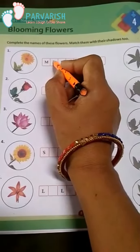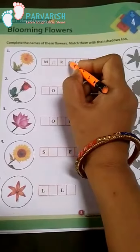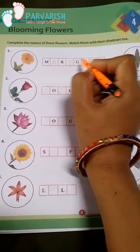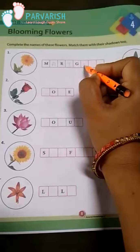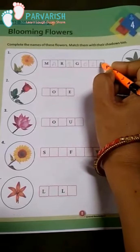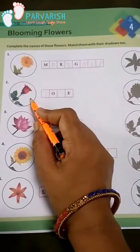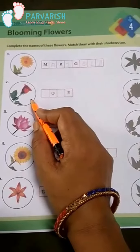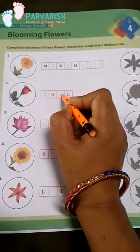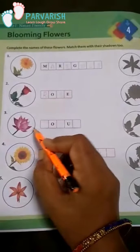Number 1 — Marigold. M-A-R-I-G-O-L-D. Marigold. Number 2 — which flower here? Rose. R-O-S-E. Rose.